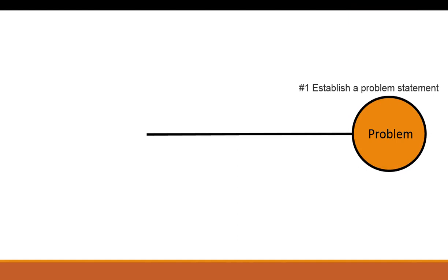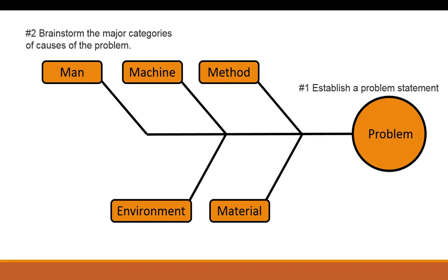How do we actually go about utilizing this Ishikawa diagram? First thing you have to do is establish the problem — that is the fish head on the fishbone diagram. Take the time to establish the problem, write it out clearly, and have everyone in the group understand what the problem statement is. If you can't establish the problem — and this is true not just in Ishikawa diagrams but in any number of problem-solving techniques — you can't really solve the problem. Next, you have to establish what the categories are going to be.